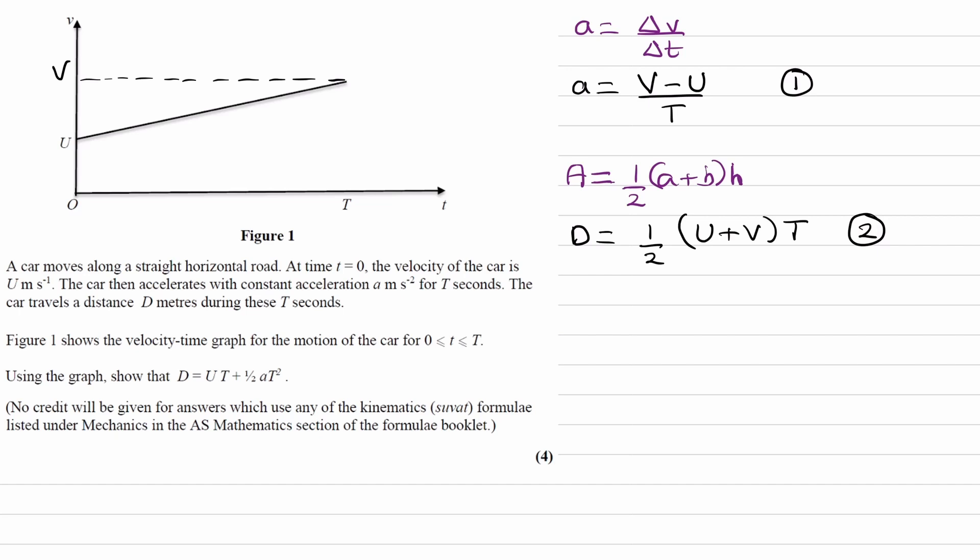So I was saying in the beginning that the first two equations that we get are two SUVAT equations. Well, this one, if we rearrange it, we'd end up with V is equal to U plus AT. That's effectively what that is. And this one, if we just rewrite the D as S, which is what it usually is written as, we end up with S is U plus V over 2 times T. So we have two SUVAT equations already. And then again, from these two things, we can derive what we need to.